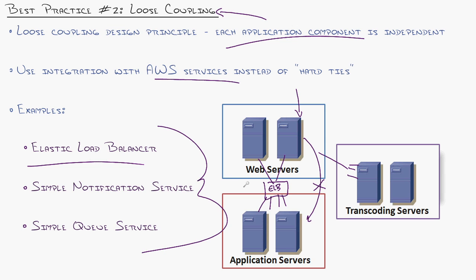Some examples of this is using Elastic Load Balancer in this way, or using the simple notification service instead of relying on a specific server to send notifications. It's using AWS built-in services instead of trying to build the services on your own because AWS has built redundancy into that.